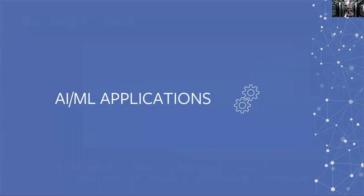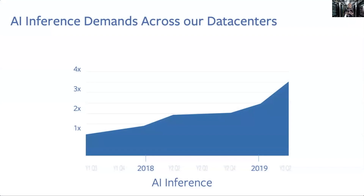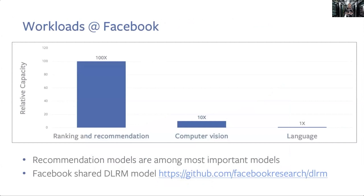Let's talk about those AI/ML applications. This is just one example — AI inference over a year and a half period back through just before 2018. The amount of inference we're doing as a workload across our data centers is increasing, and that ramp has continued, doubling approximately every year. There are three major workloads: over 80% is ranking and recommendation, then computer vision for recognizing images and tagging faces, and then language for translation.